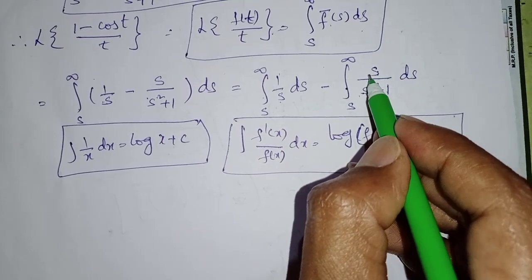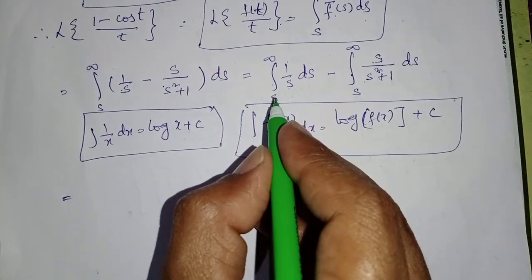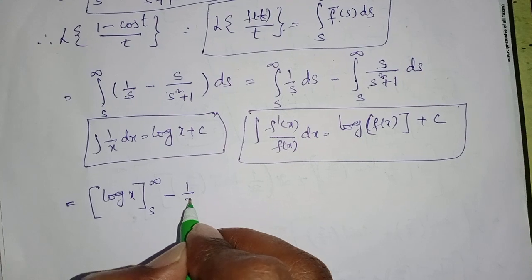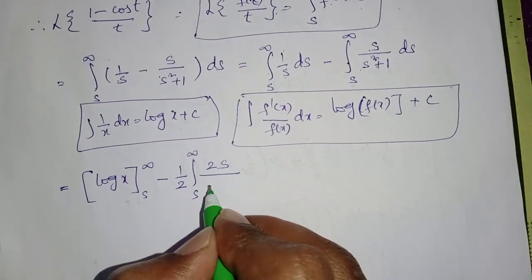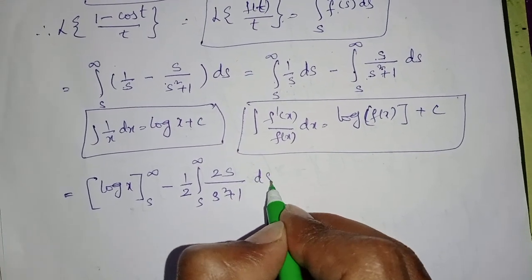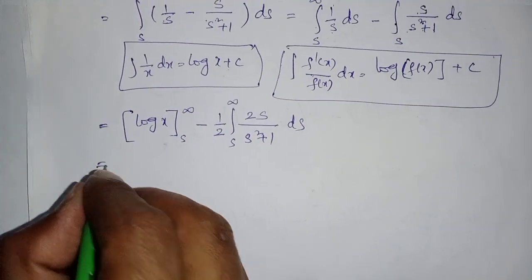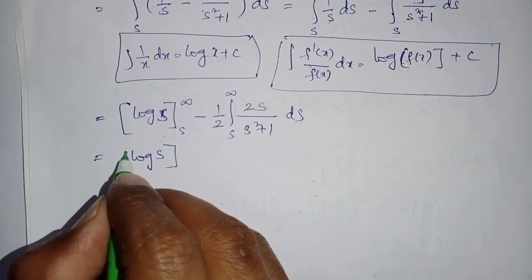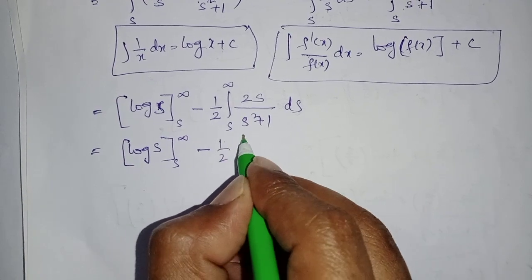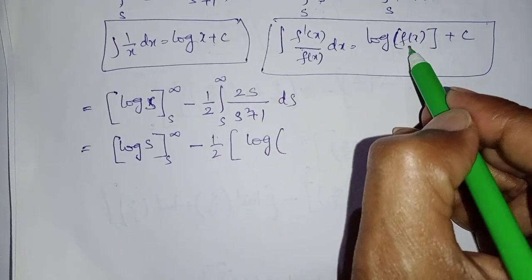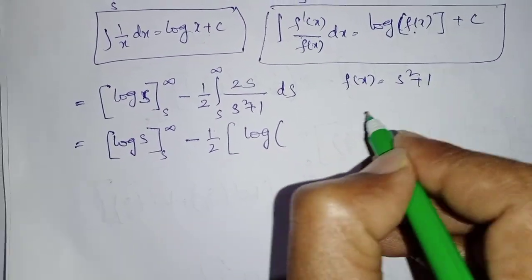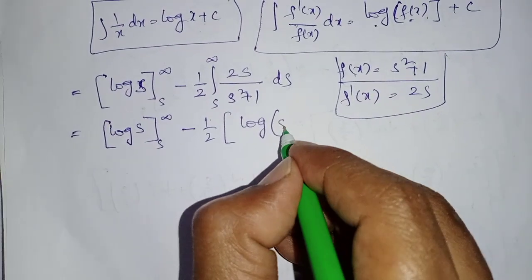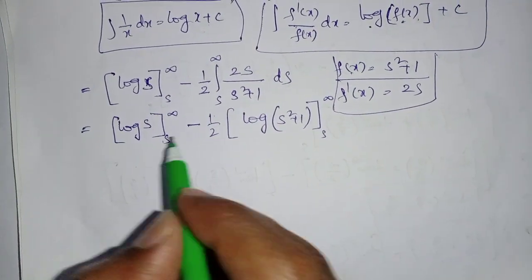In the second integral, the denominator is s² + 1 but the numerator is only s, so we multiply and divide by 2. That gives (1/2)∫_s^∞ 2s/(s² + 1) ds. Here f(x) = s² + 1 and f'(x) = 2s, so applying the formula gives (1/2) log(s² + 1), with limits s to infinity.